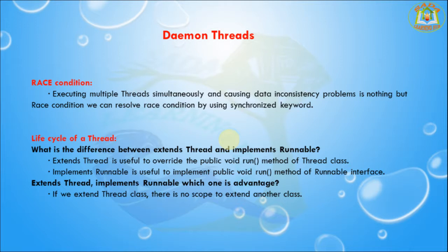Now, the life cycle of a thread: there are several states — newborn state, runnable state, running state, dead state, sleeping state, and waiting state. These are the different states in the life cycle of a thread.